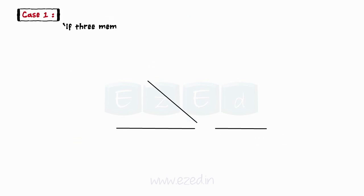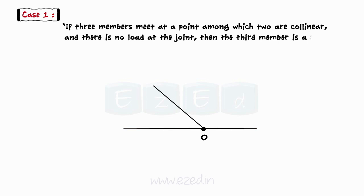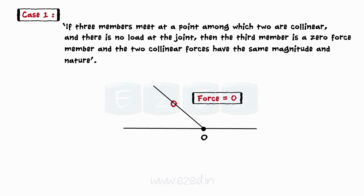If three members meet at a point among which two are collinear, and there is no load at the joint, then the third member is a zero-force member, and the two collinear forces have the same magnitude and nature.